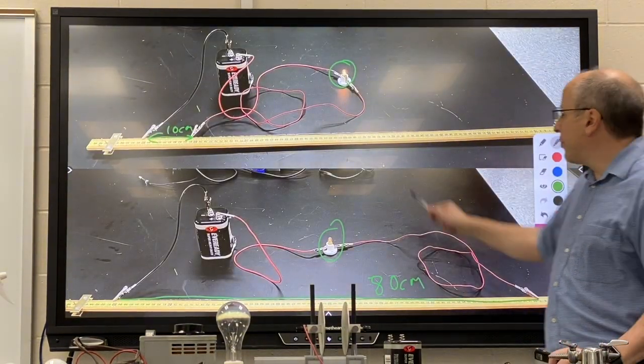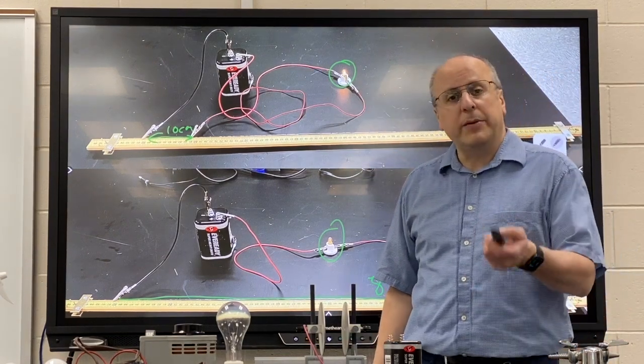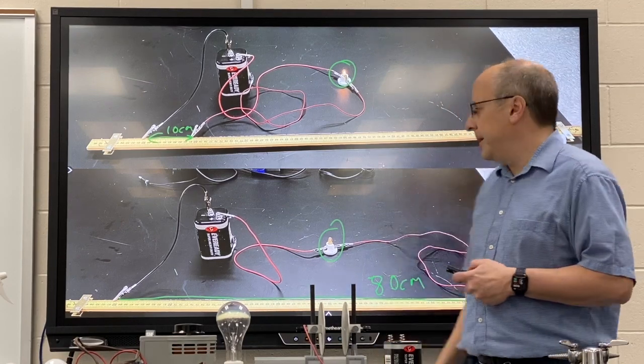And that will allow us to control how much electricity our object gets. We can make a light bright if we want it, or we can make the light dim if we want it.